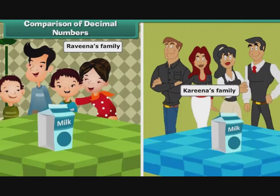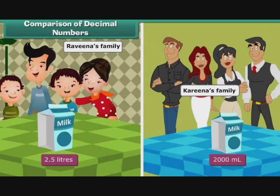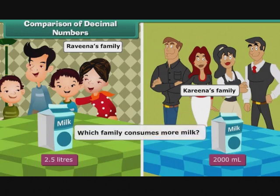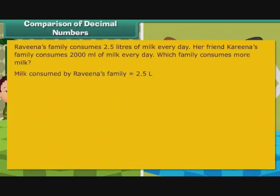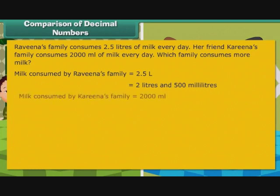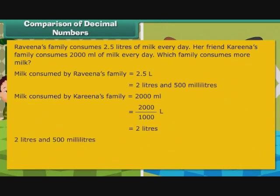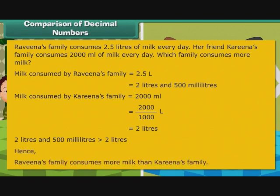Let us look at one more problem. Ravina's family consumes 2.5 litres of milk every day. Her friend Karan's family consumes 2000 ml of milk every day. Which family consumes more milk? Milk consumed by Ravina's family is 2.5 litres. Milk consumed by Karan's family is 2000 ml, which equals 2.0 litres. Since 2.5 litres is greater than 2.0 litres, Ravina's family consumes more milk than Karan's.